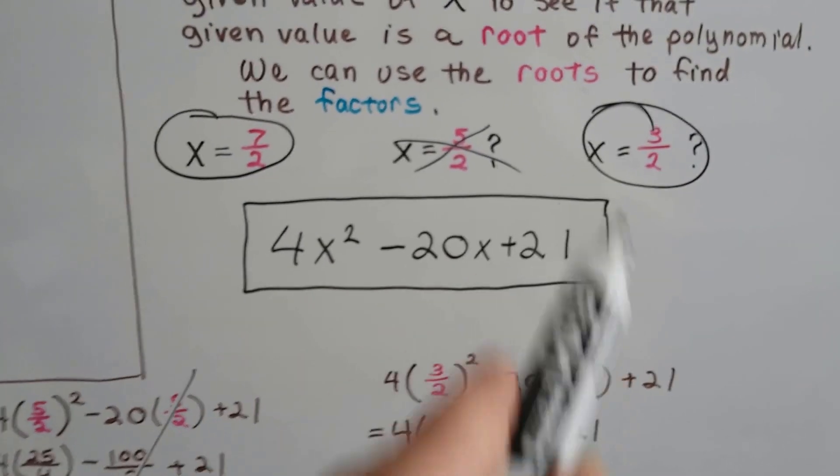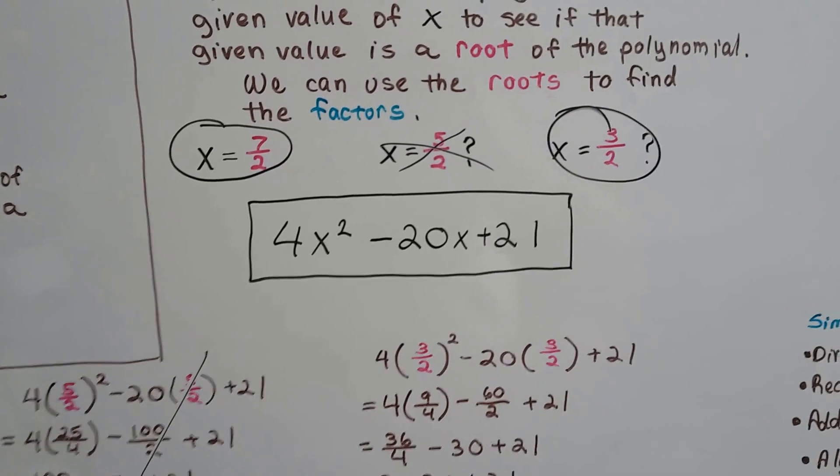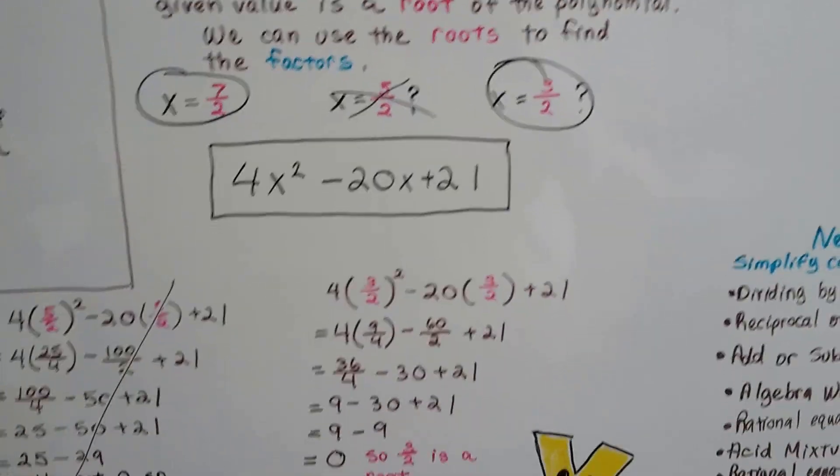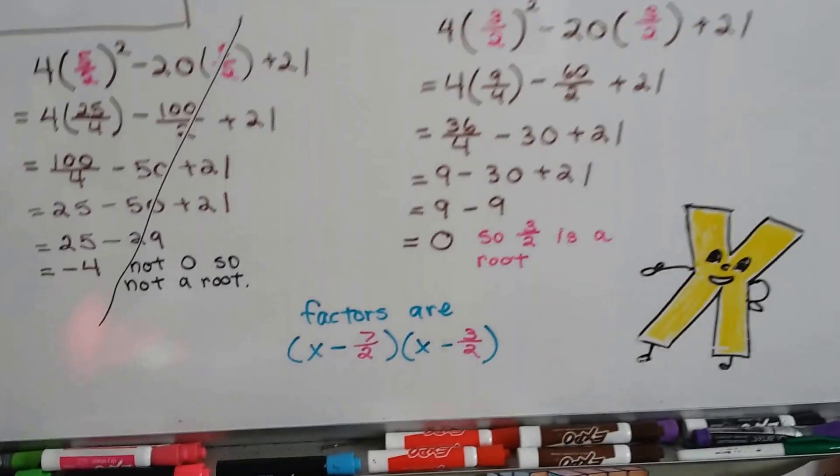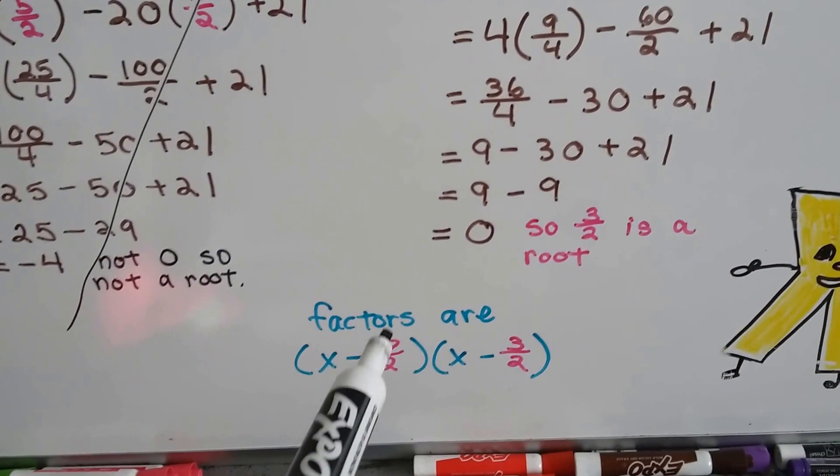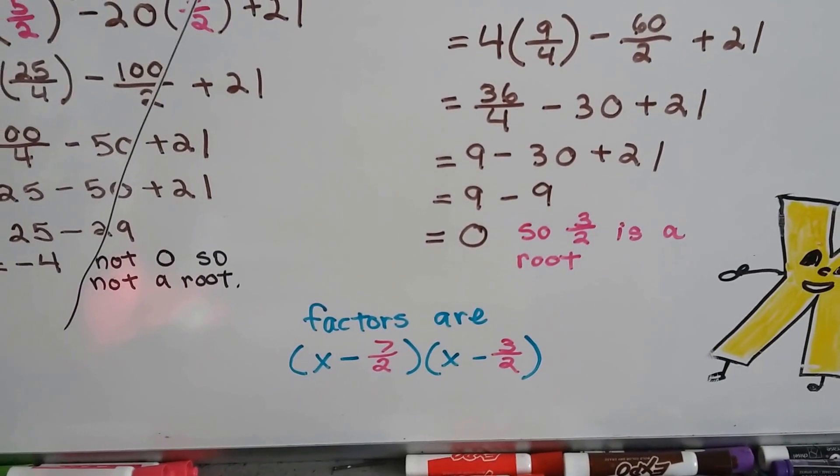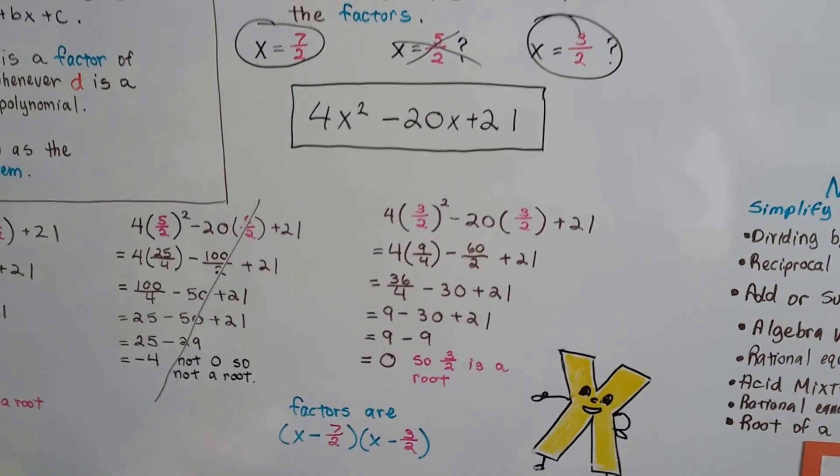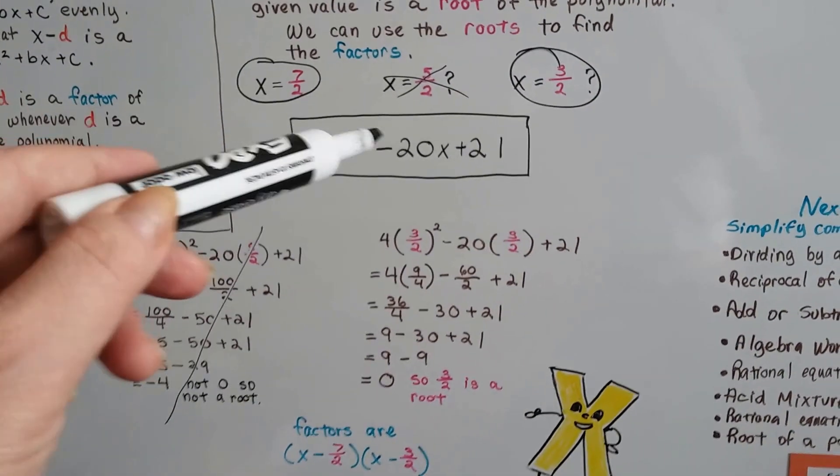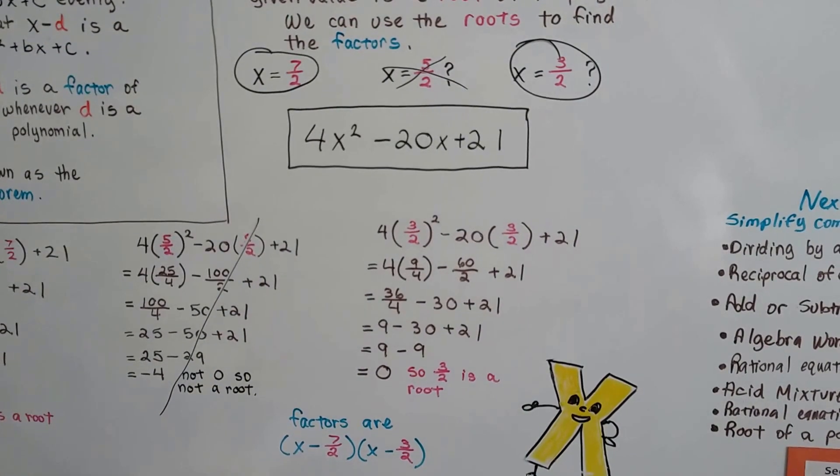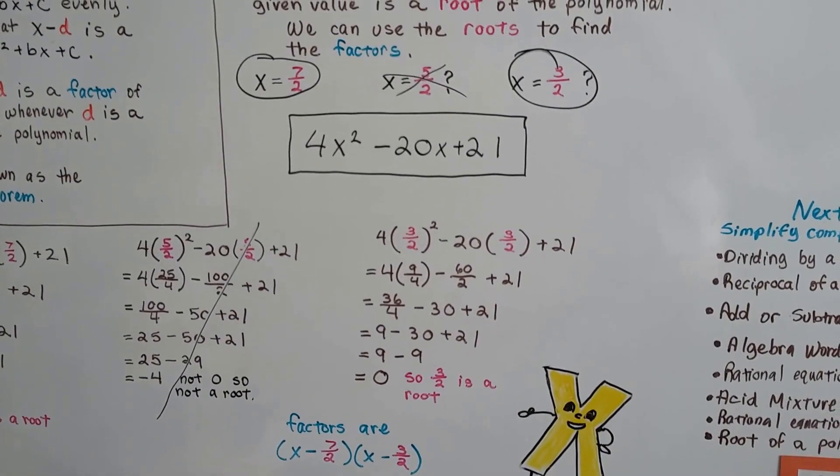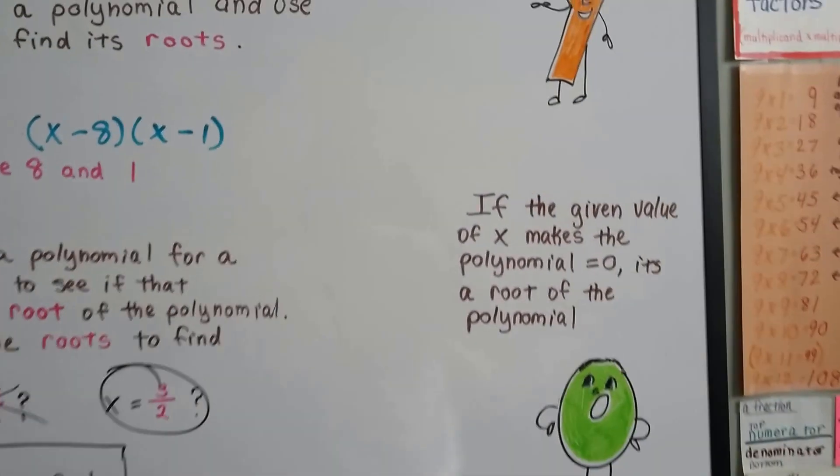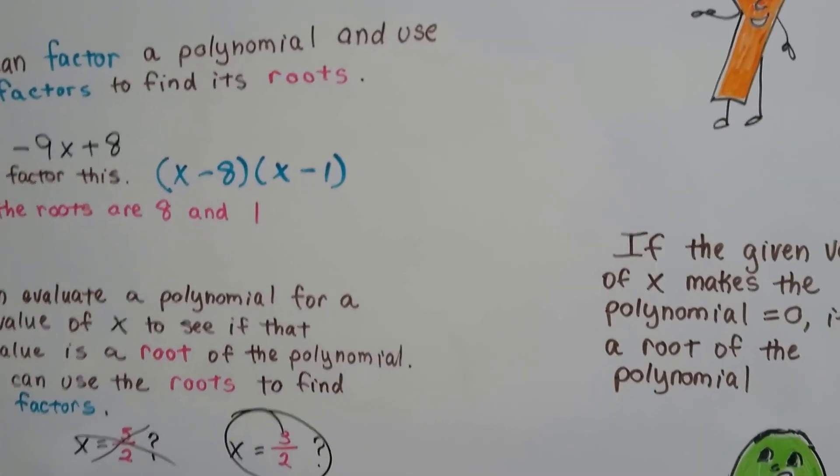So 7 halves and 3 halves did turn out to be roots of this polynomial because it made it equal 0. So our factors are x minus 7 halves times x minus 3 halves. Isn't that cool how we did that? Because these made the equation equal 0, we knew it was a factor. Pretty neat. I bet you could do this. This is the factor theorem.